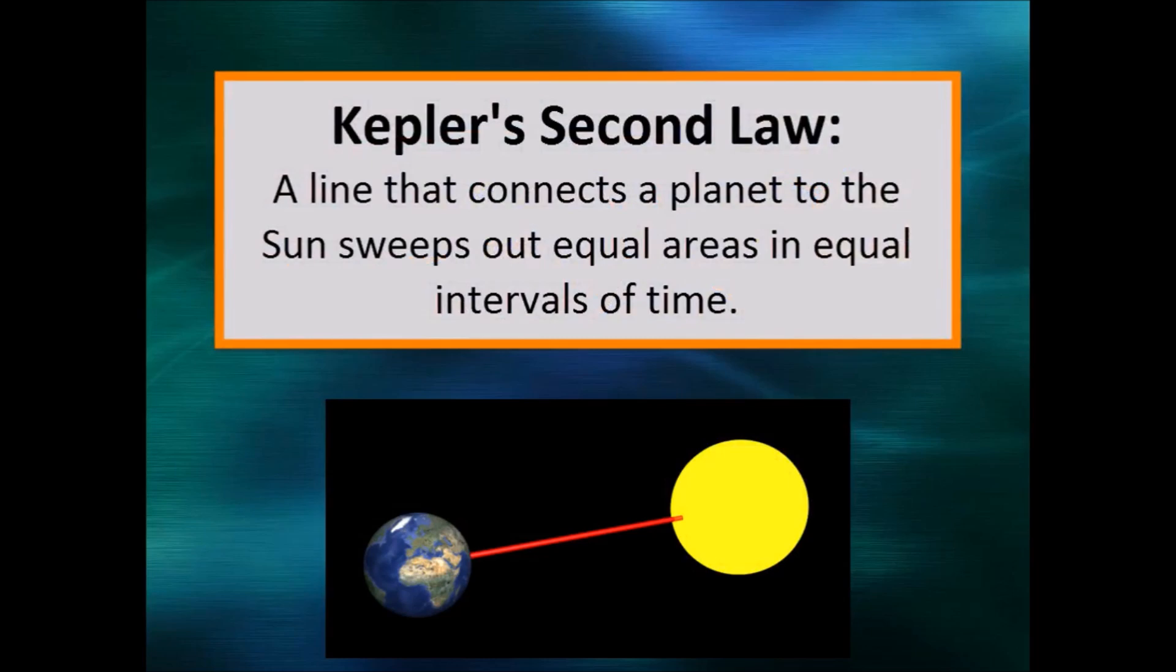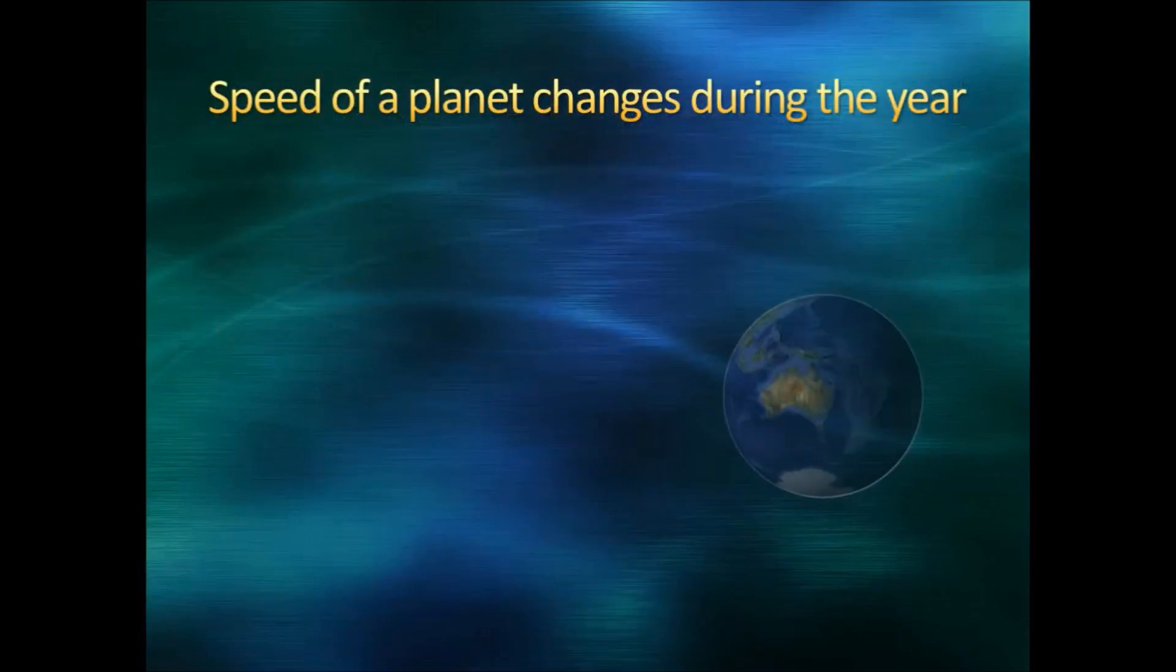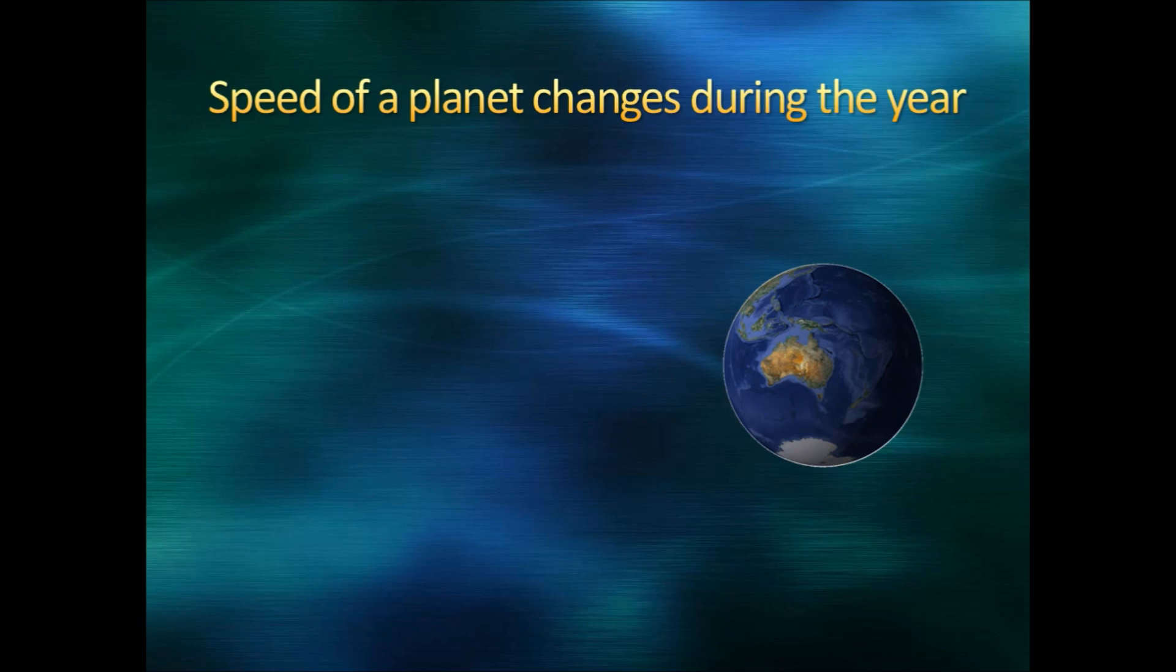Kepler's second law takes some more explanation. It says, a line that connects a planet to the sun sweeps out equal areas in equal intervals of time. What does that mean? It means that the speed of each planet changes depending on where it is in its orbit.